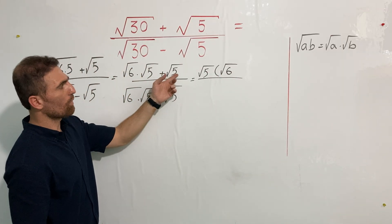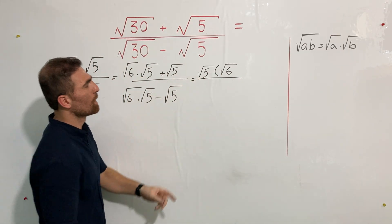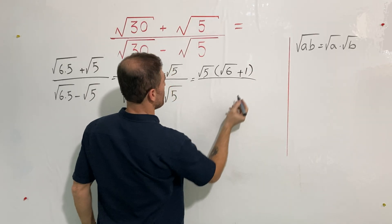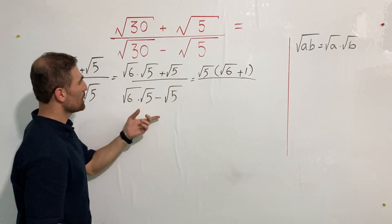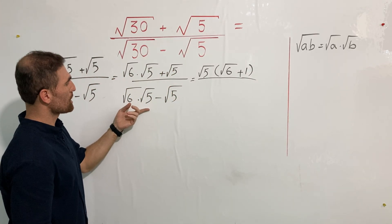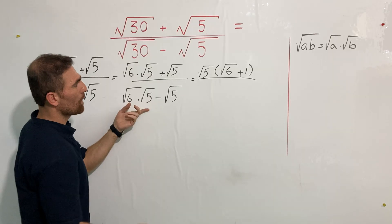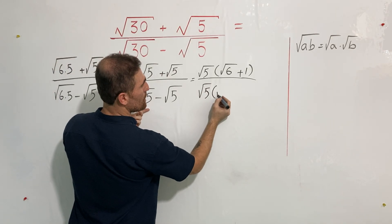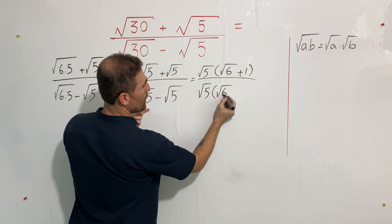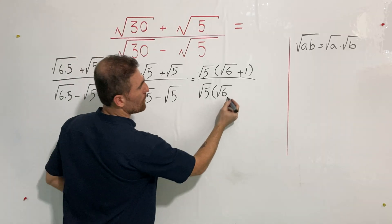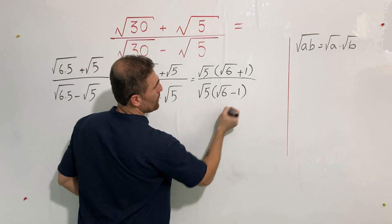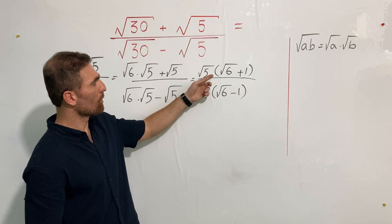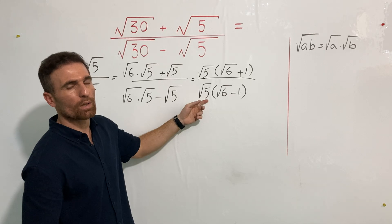Square root of 5 divided by square root of 5 is 1, so we get plus 1 in the numerator. In the denominator, square root of 6 times square root of 5 divided by square root of 5 is square root of 6, minus 1. This square root of 5 and that square root of 5 can now be cancelled off.